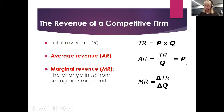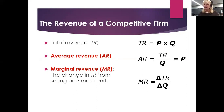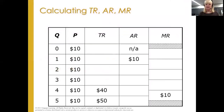And finally, marginal revenue — change in total revenue divided by change in quantity. If I'm selling lemonade for a dollar a glass and sell one more, my total revenue changes by one dollar and my quantity changes by one, so marginal revenue is one dollar. That's also the price. So marginal revenue, average revenue, and price are all the same thing in this market structure.